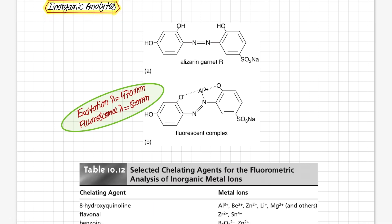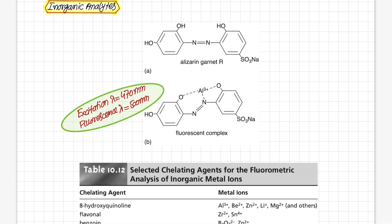Now let us discuss inorganic species. Whenever we talk about inorganic species, it means metal ions and elements. Metal ions are generally not fluorescent or phosphorescent. One exception is the uranyl ion, which is a fluorescent species. For other metal ions, we form a complex with fluorescent molecules to enable analysis.